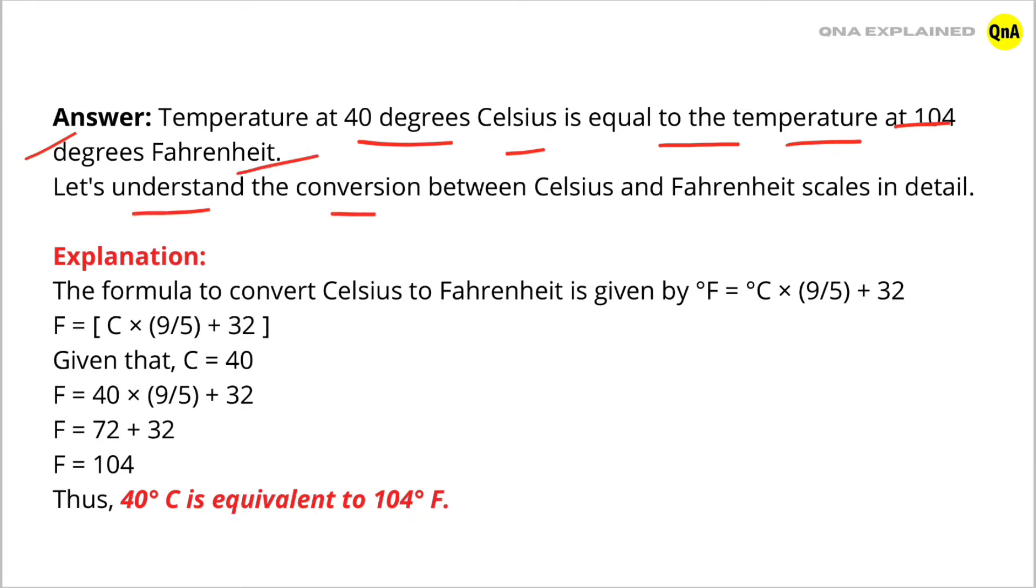Let's understand the conversion between Celsius and Fahrenheit scales in detail. The formula to convert Celsius to Fahrenheit is given by F = C × (9/5) + 32.